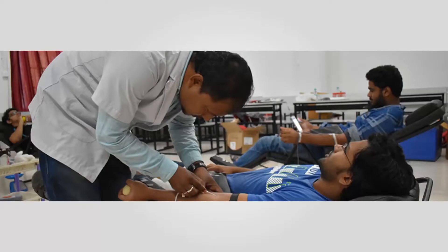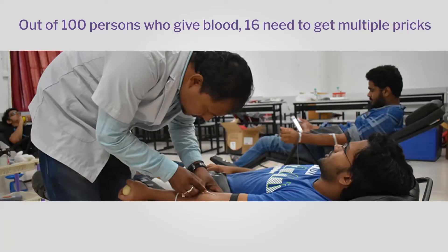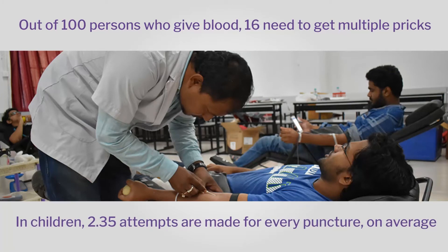When you go for a blood donation and they want to take blood from your veins, they need to do multiple pricks and it is quite painful. The average number of attempts in a child is 2.35, which is pretty high.